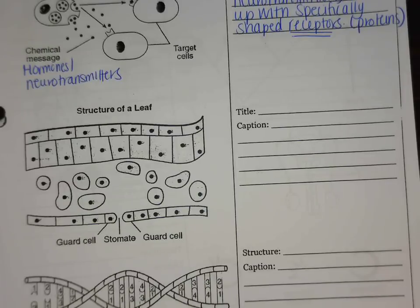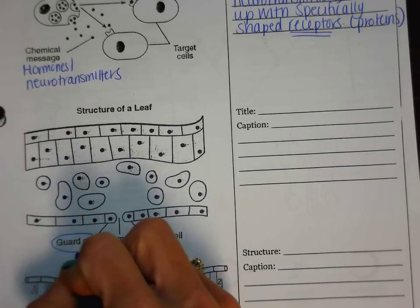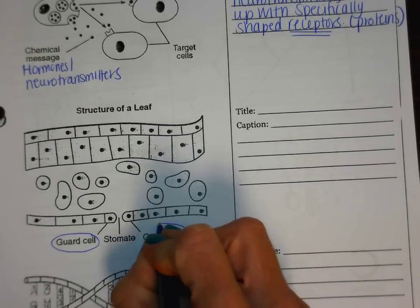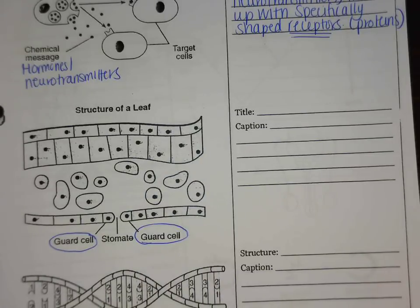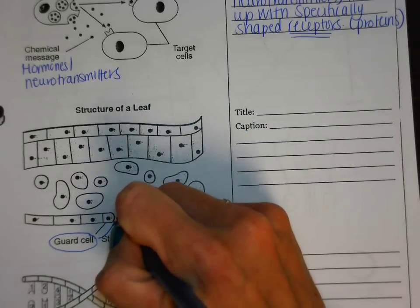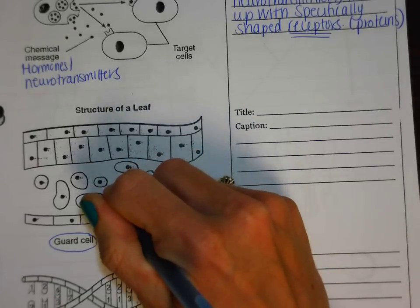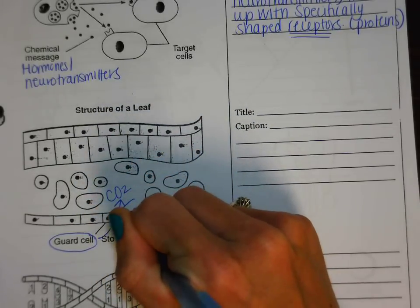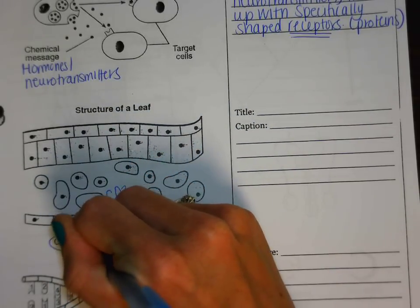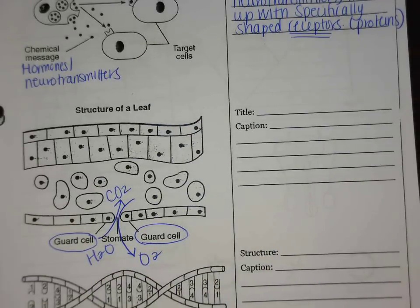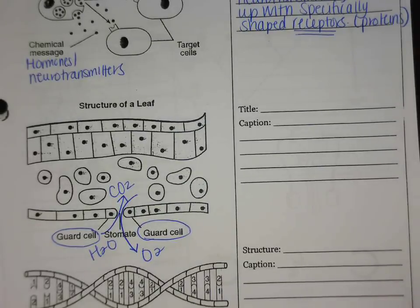This next picture says 'structure of a leaf,' and they do have some terms down here. The term we're really interested in is the guard cell. The guard cell is responsible for opening and closing to let things in and out — the types of things that go in and out include carbon dioxide, water, and oxygen.